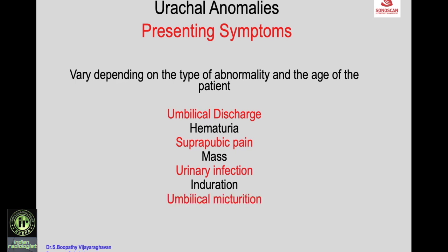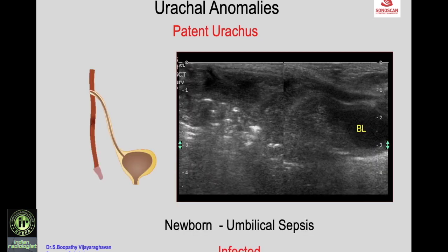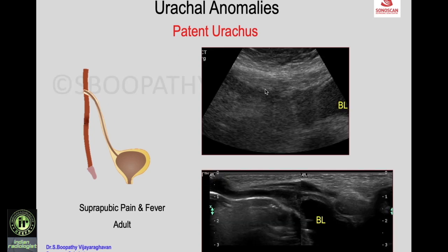A newborn presenting with umbilical sepsis and suprapubic redness shows on longitudinal scan a tender heterogeneous tract extending from the umbilicus to the urinary bladder — confirming an infected patent urachus. In an older child, the infected tender patent urachus extends from the umbilicus to the bladder, and in an adult after treatment only a narrow tract remains following antibiotics.